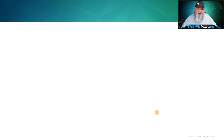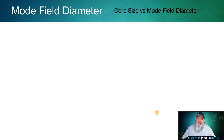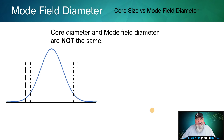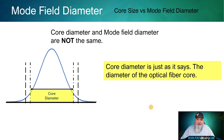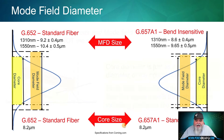So what exactly is mode field diameter? Mode field diameter is essentially the area of a fiber that the light travels through. It is often confused with core size, but they are not the same thing. Core diameter is simply the size of the actual core itself — about 8.3 microns for standard single mode fiber. Mode field diameter is the section of the fiber the signal travels through; the bulk travels through the core, but at longer wavelengths the signal also travels a little bit into the cladding.